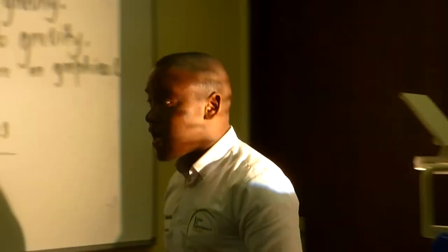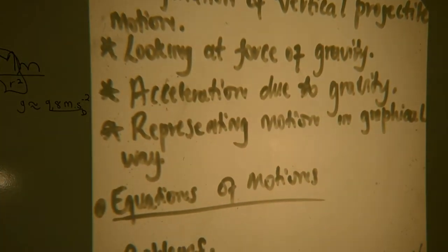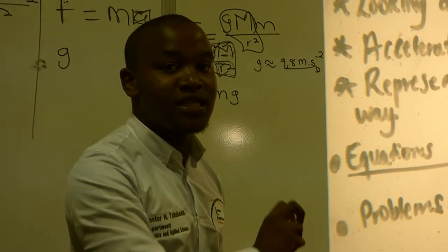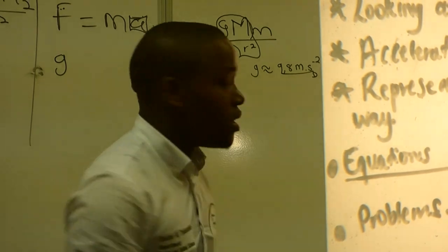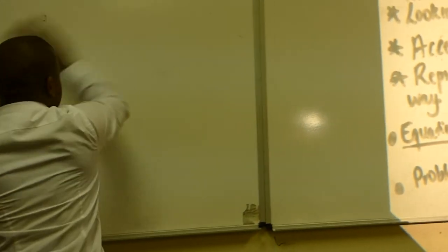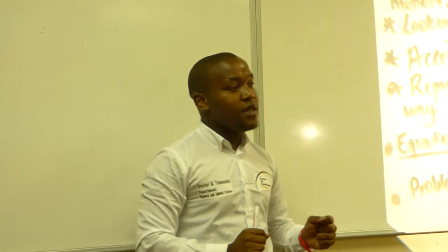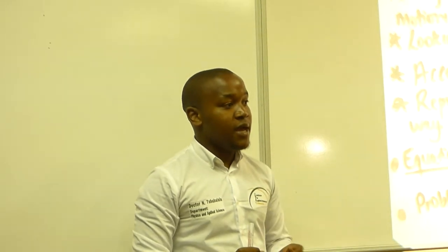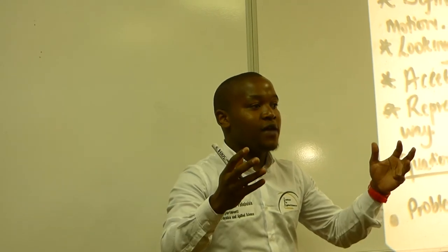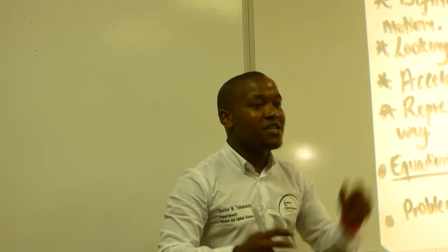Now let's talk about representing motion in a graphical way. As scientists, we always want to communicate our data and make our research and analysis easier for people to understand. We do this using three types of graphs: graph number one is displacement versus time — some textbooks call it position versus time graph; graph number two is velocity versus time; and graph number three is acceleration versus time.